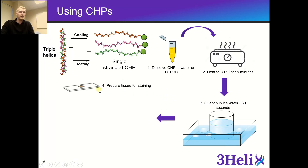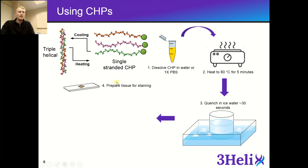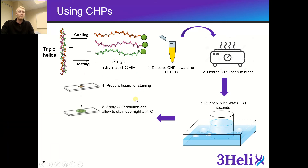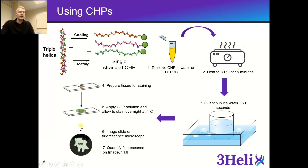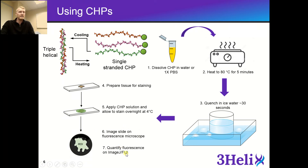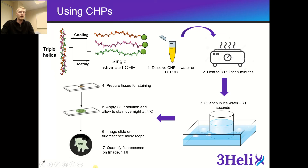Once you quickly cool down the solution, you can apply it onto your slides. CHPs can work with frozen tissues, as well as formalin-fixed and paraffin-embedded tissues. You will need to follow the deparaffinization protocols before staining with CHPs, but they work with both frozen and FFPE sections. After preparing your tissue, apply your cooled CHP solution onto your tissue sample and allow it to stain overnight at four degrees C. Then wash it out and image the slide on a basic fluorescence microscope, and quantify fluorescence using ImageJ or Fiji. There is an application note that goes over image quantification in greater detail.